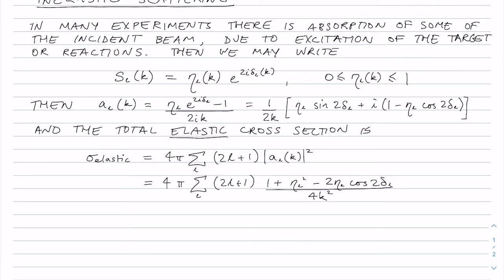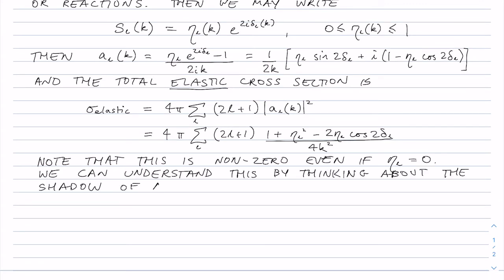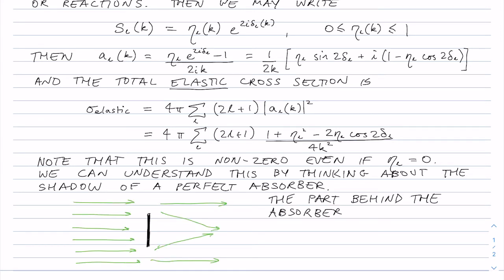There's also going to be an inelastic contribution which we'll get to in a moment, but the interesting thing is that even this elastic contribution is non-zero in the case of eta equals 0 itself. So even in the case of a perfect absorber, we're going to have a non-zero elastic contribution. So even if eta equals 0, then we still have this leading term here.